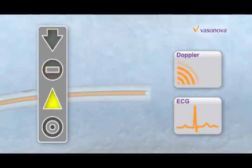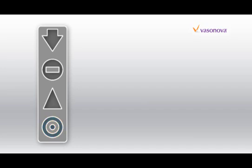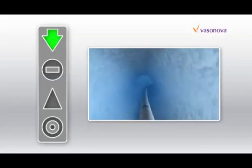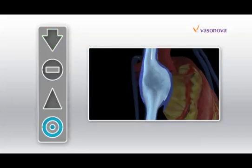The green arrow indicates the catheter tip is moving with the blood flow towards the heart as appropriate. The blue bullseye indicates the tip has arrived in the lower one-third of the superior vena cava or at the caval atrial junction.